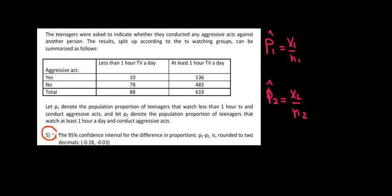Let's have a look at question 5. The teenagers were asked whether they conducted any aggressive acts. Based on that, we want to see the relationship between their aggressiveness and how much TV they watched. We have here aggressive — whether they performed acts or not — and how much TV they watched, either less than an hour or at least an hour per day.